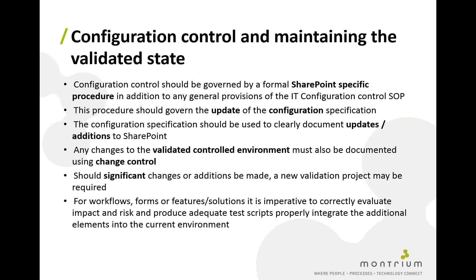Once a system is in production, we need proper configuration control to maintain the validated state. Usually we'll have a specific procedure or governance plan for SharePoint to address its specific context, which can cross-reference a more general IT configuration control SOP. The procedure should govern the update of the configuration specification and the whole process for updating and applying those changes. It should document any updates or additions to the SharePoint environment with third-party applications or solutions. Any changes to the validated controlled environment must be documented using change control, typically using a change control form and SOP.